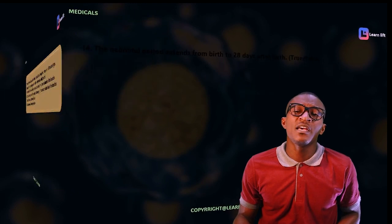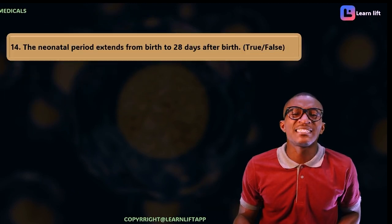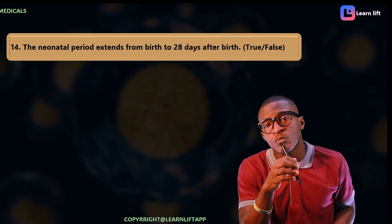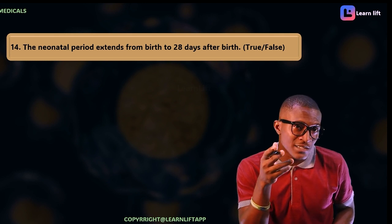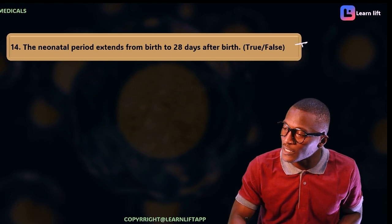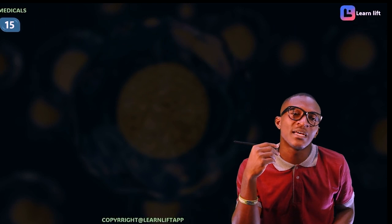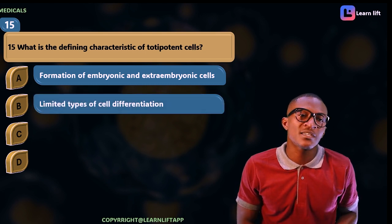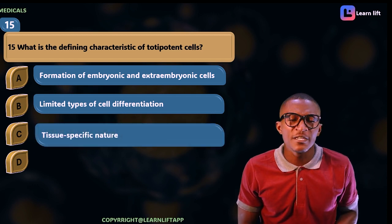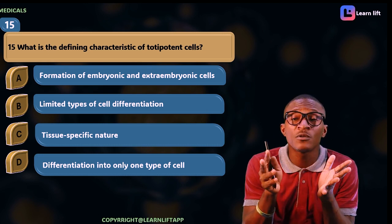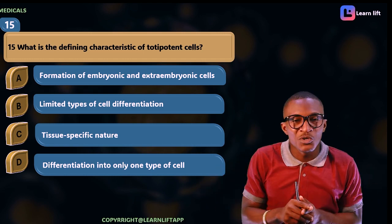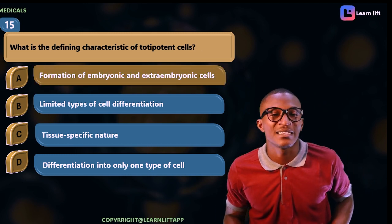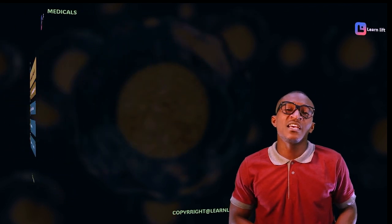The next question: the neonatal period extends from 28 days to birth — is that correct? Yes, neonatal refers to newborns from birth up to 28 days, so this is true. Next: what is the defining characteristic of a totipotent cell? Options include formation of embryonic and extra-embryonic cells, limited cell types, tissue-specific differentiation, or only one cell type. Totipotent means total potential — it forms both embryonic and extra-embryonic structures such as the embryo and placenta. Option A is correct.